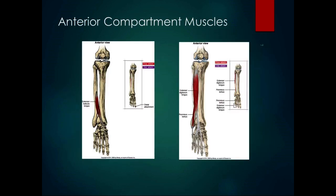The extensor hallucis longus is deep between the tibialis anterior and the extensor digitorum longus, originating on the middle anterior surface of the fibula and interosseous membrane. Its insertion is the dorsal base of the distal phalanx of the first toe. It has a slight line of pull for inversion due to that lateral-to-medial direction, but its big unique action is extending the first MTP and IP joints. It also assists the tibialis anterior in dorsiflexion, and gets the deep peroneal nerve.